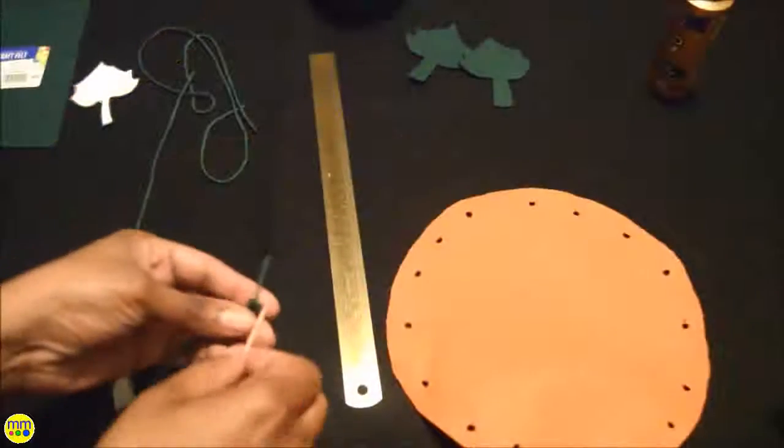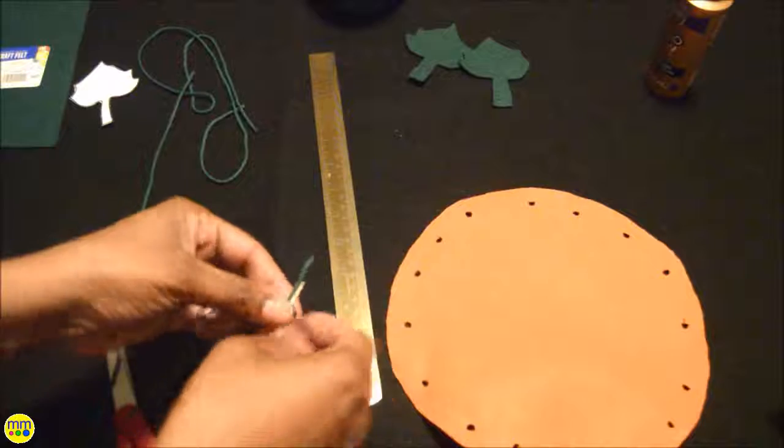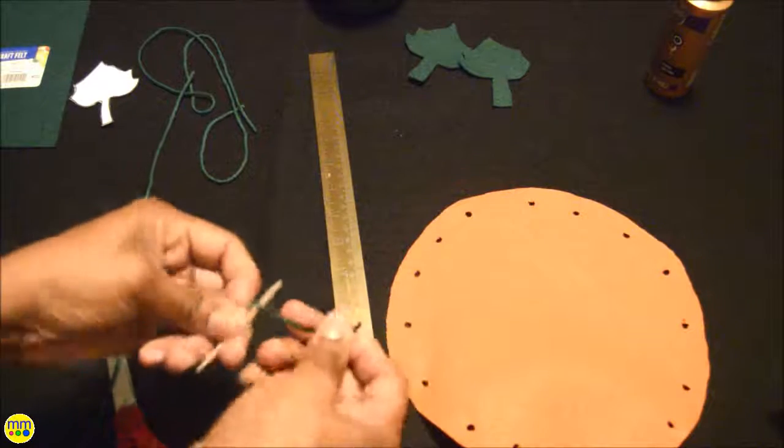Take some yarn and tie it around the toothpick. Use the toothpick as a needle to thread the circle.